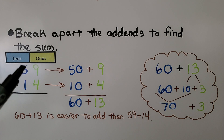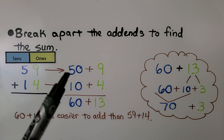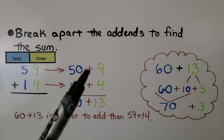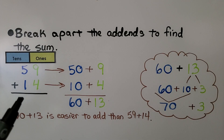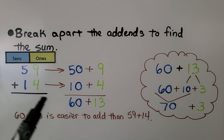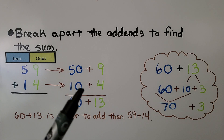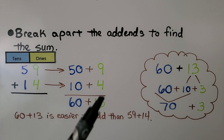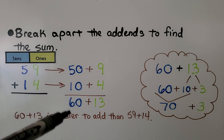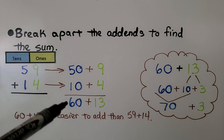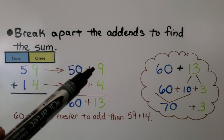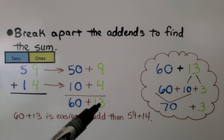We break apart the addends to find the sum of 59 plus 14. 59 is 5 tens and 9 ones, so we write it as 50 plus 9. 14 is 1 ten and 4 ones, so we write it as 10 plus 4. We add the tens: 50 plus 10 is 60.